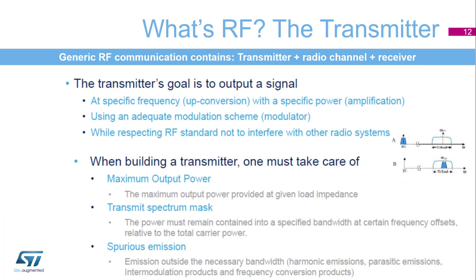RF transmitter: the transmitter's goal is to output a signal at a specific frequency with a specific power. It performs up-conversion and amplification using an adequate modulation scheme, while respecting standards so as not to interfere with other radio systems.